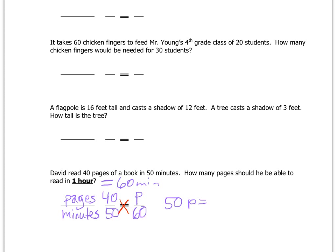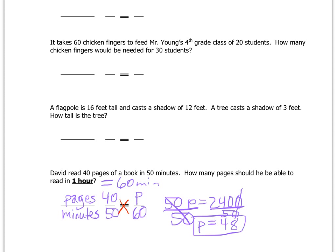4 times 6 is 24, and then we add the two zeros, so that gives us 2,400. So we have 50p = 2,400. To get variable p all alone, we divide both sides by 50. The 50s cancel to 1, leaving p alone. On the right side, 50 and 2,400 are both divisible by 10, so we cross out those ending zeros — this is the same as 5 into 240. 5 goes into 240: 5 goes into 100 twenty times, 5 goes into 40 eight times, so the answer is 48. David should be able to read 48 pages in one hour.